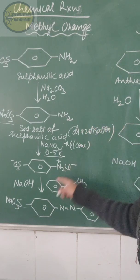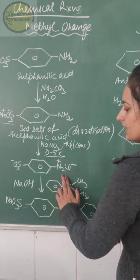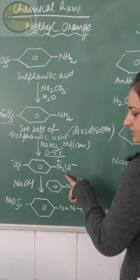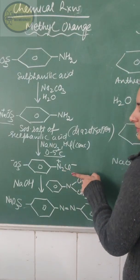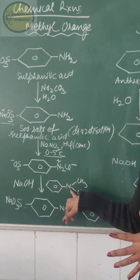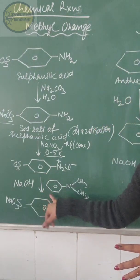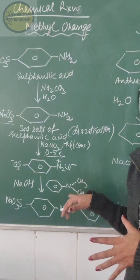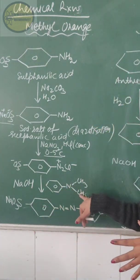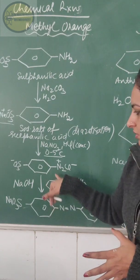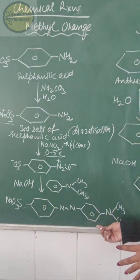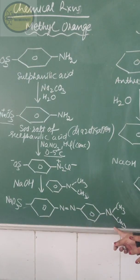In the next step, we have prepared the diazonium salt of sulfanilic acid. After diazonium salt preparation, we couple it with the aromatic amine — N,N-dimethylaniline. The diazonium salt couples with the dimethylaniline and you get methyl orange. This is the formula of methyl orange.